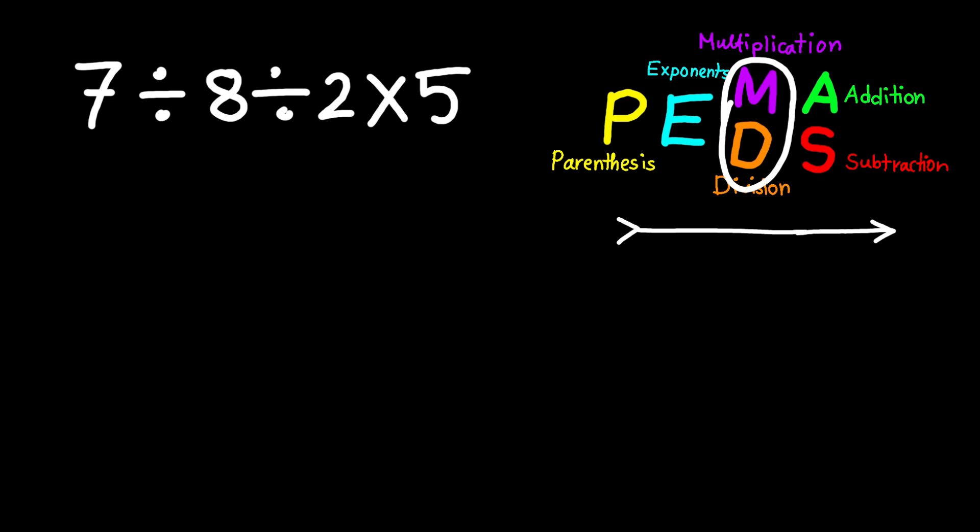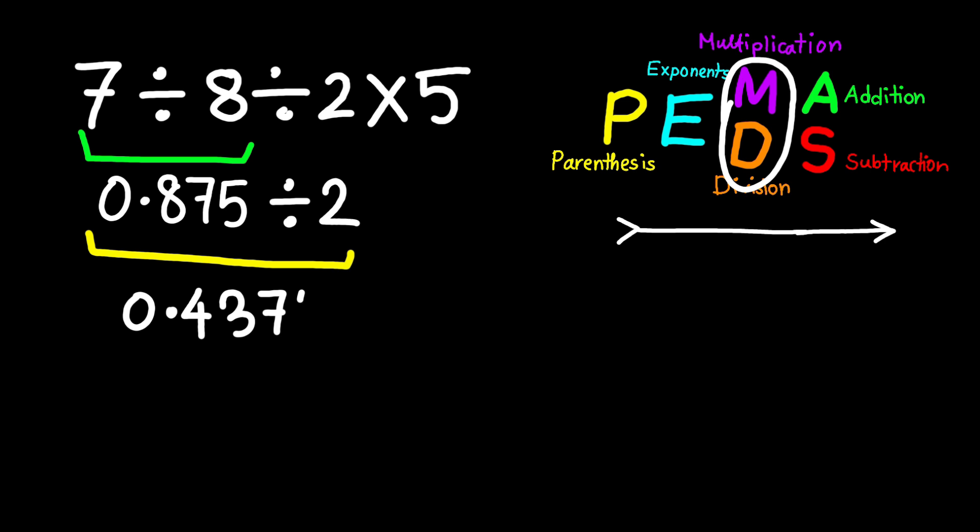So here we start from the left: 7 divided by 8 which equals 0.875, then 0.875 divided by 2 which equals 0.4375, and now we multiply by 5 which gives us 2.1875.